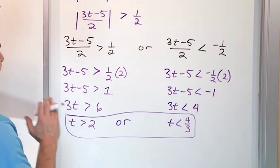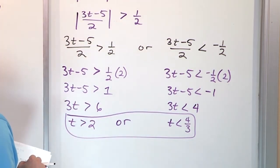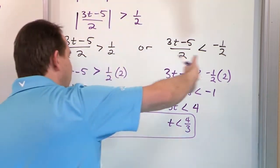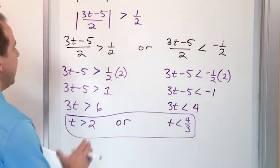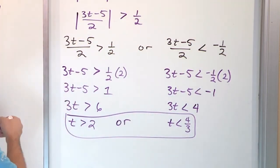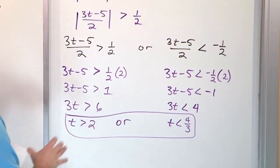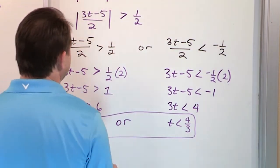One or the other — they both don't have to be true. One region is going off to the right to infinity, and the other is going to the left off to negative infinity. That region is where we have the solution to the original problem.